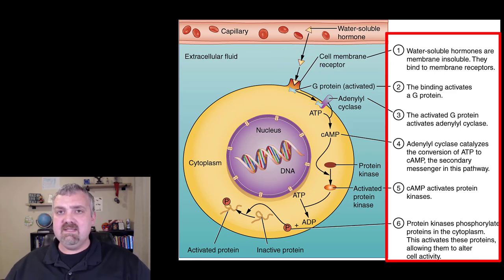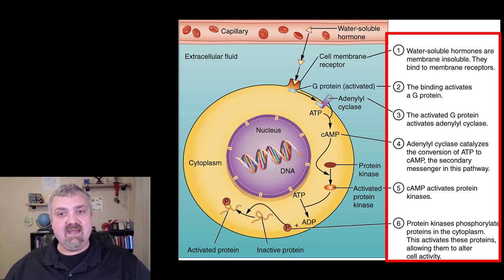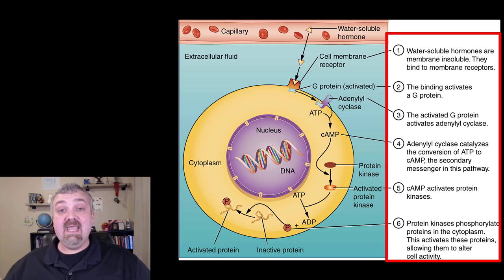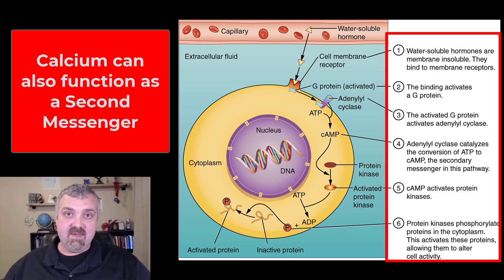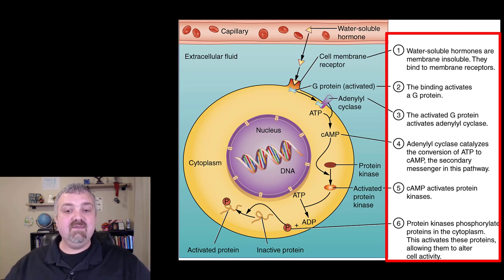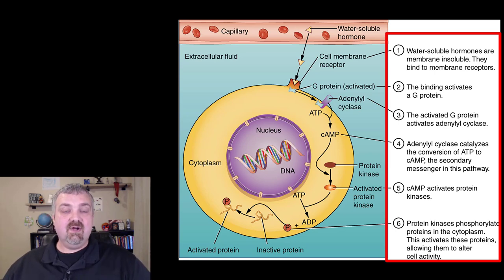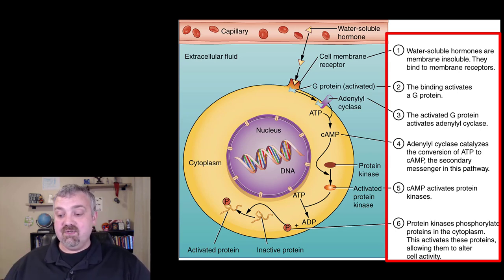Water soluble hormones are membrane insoluble — they can't walk through the lipid bilayer, so they have to bind to a receptor. The binding is going to activate this cascade. It's important to note that the hormones don't actually enter. They're going to trigger the production of cyclic AMP, and that's the most important second messenger. You should also note that some cells use calcium as a second messenger, but cyclic AMP is more important. Once cyclic AMP has been elevated, you're going to start to see proteins being produced and altered cell activity.